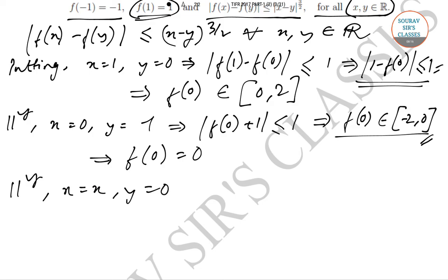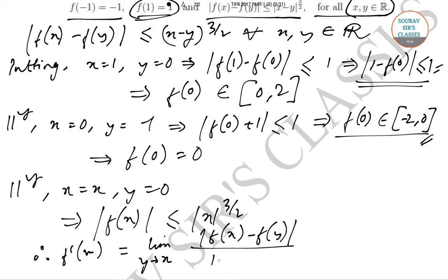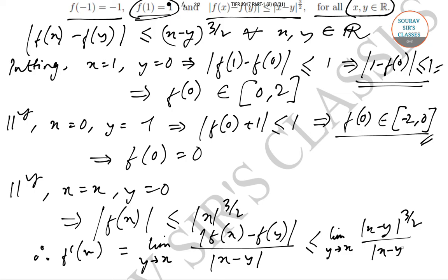Putting x = x and y = 0, we find |f(x)| ≤ |x|^(3/2). Now, f'(x) = lim(y→x) |f(x) − f(y)| / |x − y|, which is less than or equal to lim(y→x) |x − y|^(3/2) / |x − y|, which equals lim(y→x) |x − y|^(1/2).